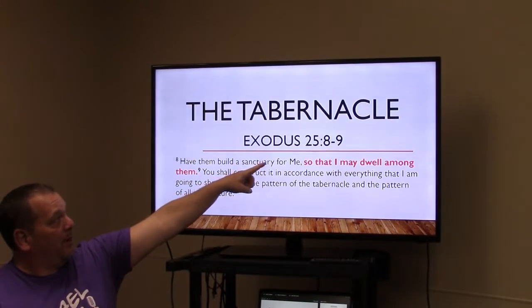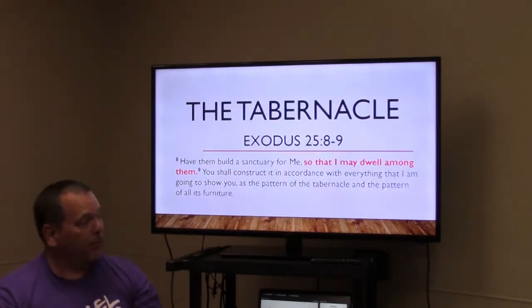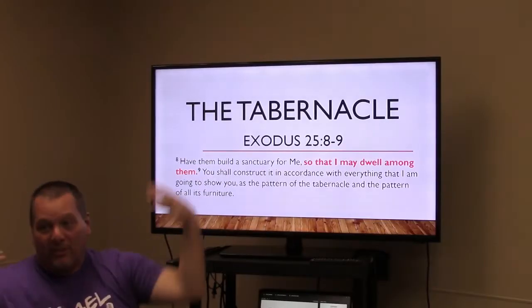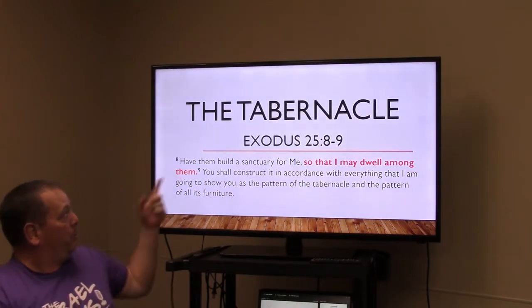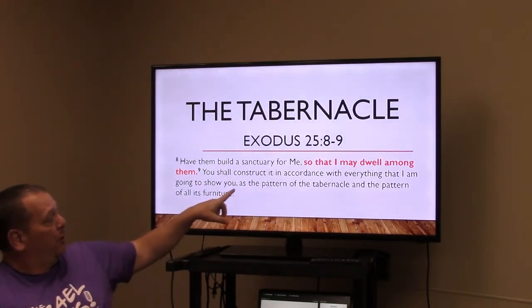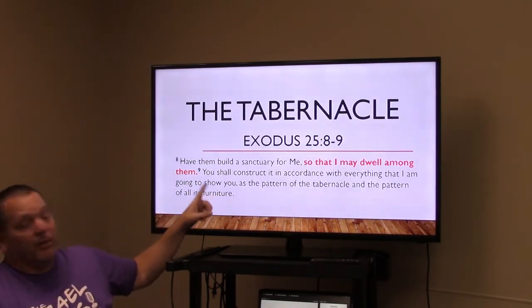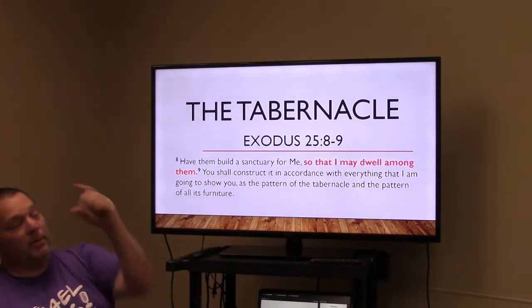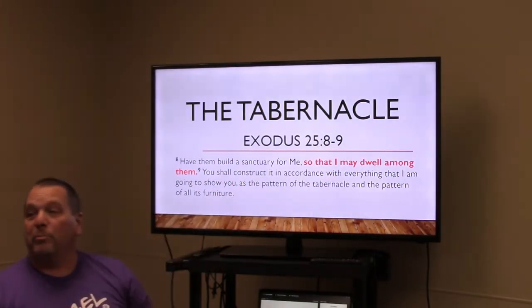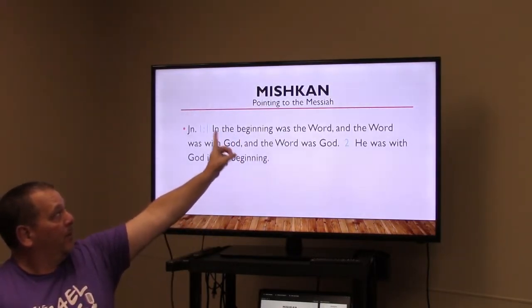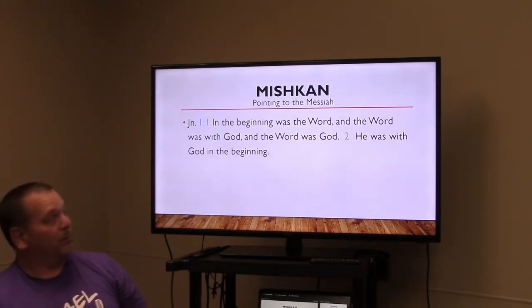The tabernacle's origin is in Exodus 25:8-9 — 'Build me a sanctuary so that I may dwell.' That word 'dwell' is mishkan. God is saying he wants to be with you, build him a place. He says make it according to the pattern of the tabernacle and all its furniture that I will show you. And this points to the Messiah — mishkan.